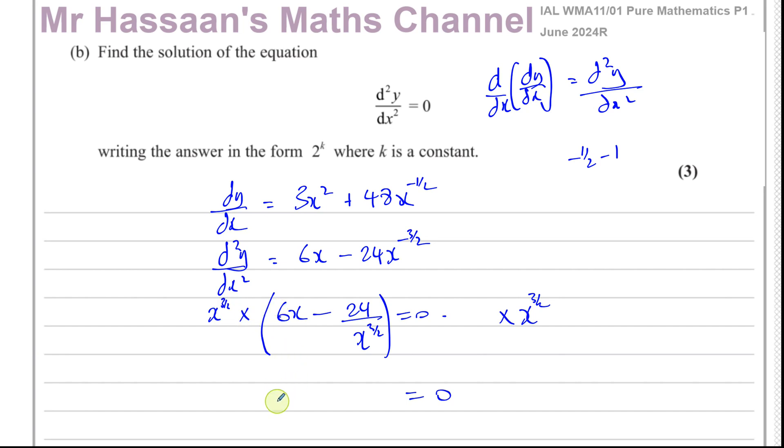x to the power of three over two times six x: when you multiply 6x by x to power of three over two, we use the law of indices that when you multiply two numbers in index form with the same base, you add the power. So you're going to have one plus three over two, which is two over two plus three over two, which is five over two. So this will be 6x to the power of five over two. And x to the power of three over two times negative 24 over x to the power of three over two, they cancel out. So you're left with negative 24. And this is zero.